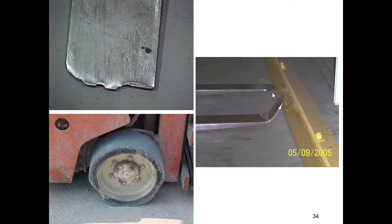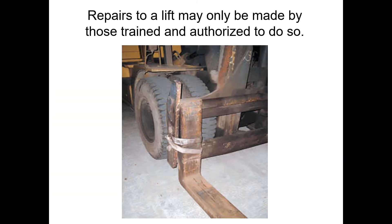If forks are badly bent or damaged, it's time to take the forklift out of service. Solid tires will chip off, especially when driven on rough surfaces or over pallet boards on the floor. Any damaged forklift must be documented, handed to a supervisor, and addressed before use. Repairs may only be made by those trained and authorized — most companies contract with their nearest forklift vendor for this.